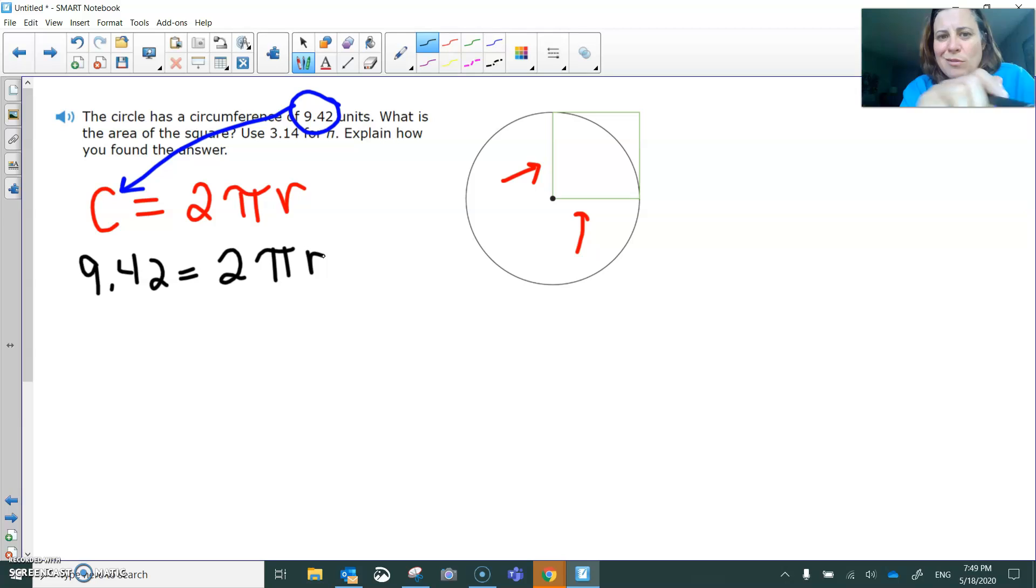So I'm going to get rid of everything. I'm trying to get r by itself. And I'm going to get rid of everything with r, the 2 and the π. Technically you could do that all at once, but I'm going to do it step by step. So I'm going to start by getting rid of multiplying this problem by 2. The opposite of multiplying by 2 is dividing by 2. And that leaves us with 4.71 equals πr.